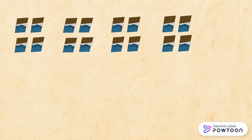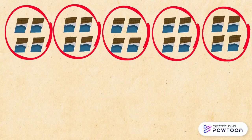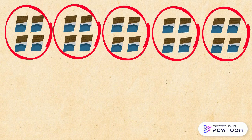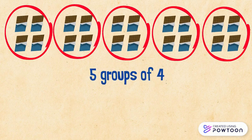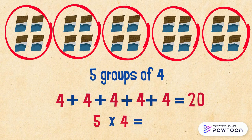Here we have another example: 5 groups of 4 chocolate bars. If we count them, we get 20 chocolate bars. 5 groups of 4 equals 20. Also, 4 plus 4 plus 4 plus 4 plus 4 equals 20. And we can also write this as 5 times 4 equals 20.